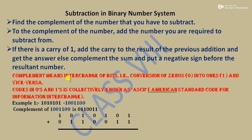Example: 1010101 minus 1001100. The number we are subtracting from remains unchanged. We take the complement of 1001100 — replacing 1s with 0s and 0s with 1s — to get 0110011. Now we will add these two numbers.